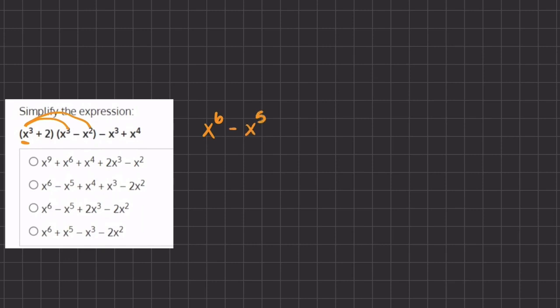Now we're going to do the same for the second term here. We multiply this 2 by the two values we have in the second parentheses, meaning that we get plus 2x to the third minus 2x to the second.